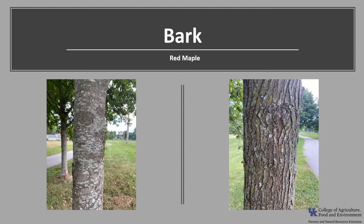The bark on young trees is smooth and light gray. As the tree ages and grows, the bark darkens and breaks into long scaly plates. The tree's thin bark, especially on younger trees, makes it very sensitive to fire.